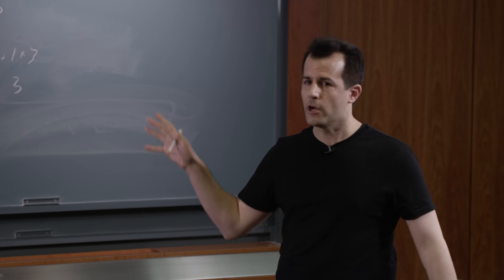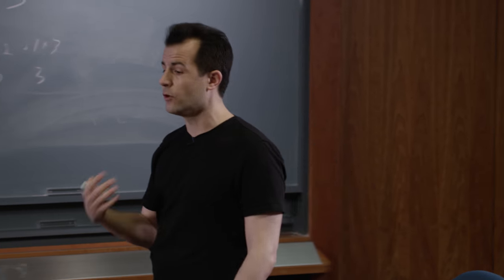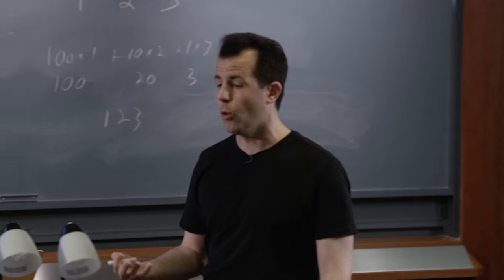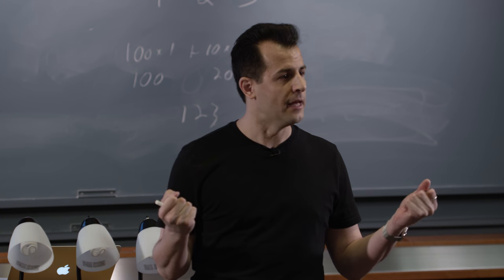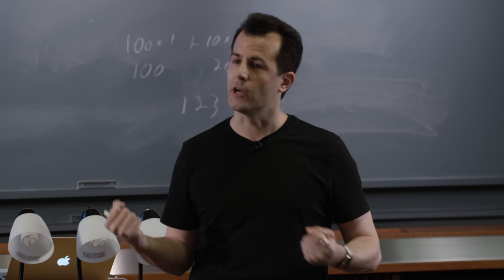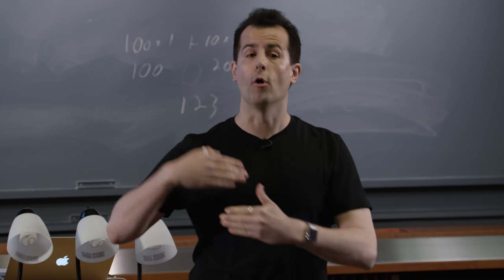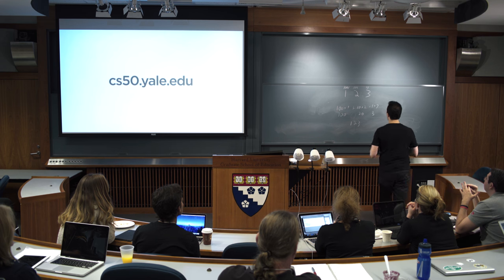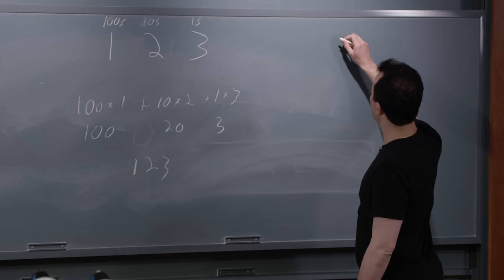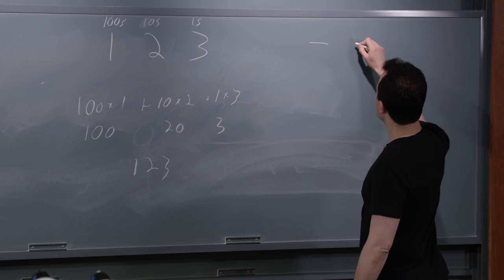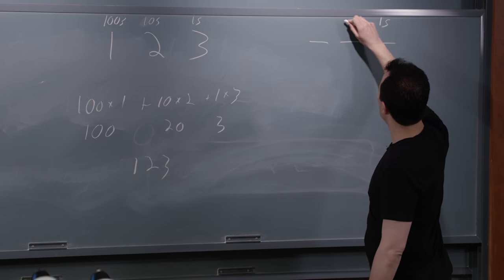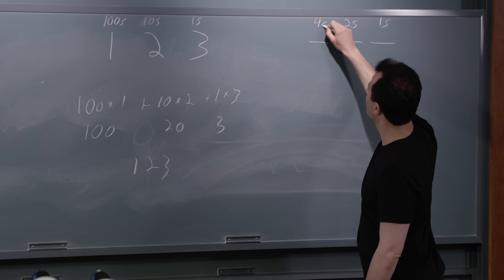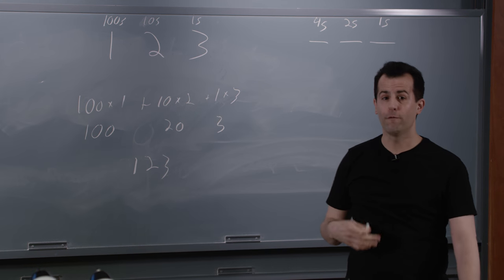We try to go through this process fairly quickly because we don't want to send a message on the very first day of the course that CS is all about math. So we very quickly transition to what people would call binary, where now you have maybe 3 placeholders but the columns are just a little different: the ones place, the twos place, and the fours place.